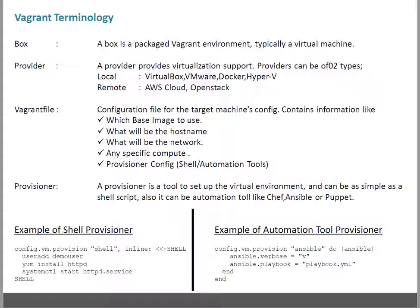The Provisioner is basically an automation tool or configuration management tool — it can also be a shell script. There are two types of provisioners: shell script provisioner and automation tool provisioner. In shell provisioning, you use shell commands to do the configuration — for example, running useradd, yum commands, and starting services inside the virtual machine. You can also call an external script. With an automation tool provisioner, such as Ansible, you can call an Ansible playbook to execute on the target machine.